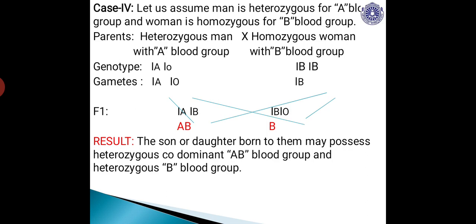In the first case, both parents were homozygous. In case 3, the man was homozygous for A blood group and the woman was heterozygous for B blood group. But here in case 4, the man is heterozygous with A blood group and the woman is homozygous with B blood group. When you change the homozygosity or genotype of the parents like this, we call this kind of crossing a reciprocal cross. There is another possibility of a reciprocal cross where geneticists change the sex of the individual while considering the same phenotype.